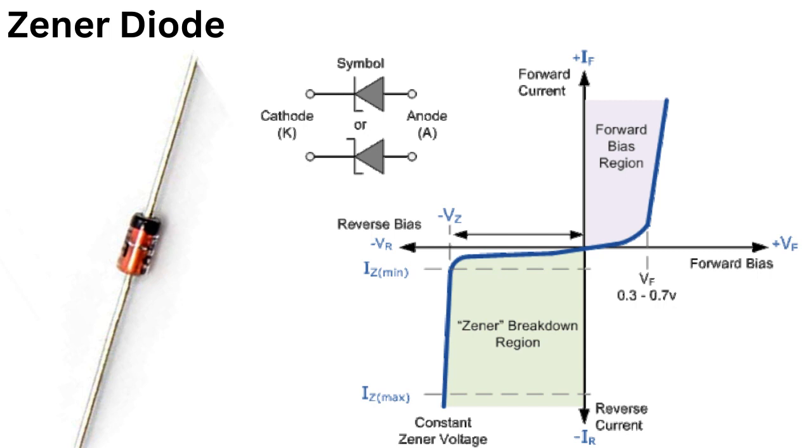While Zener diodes are primarily used in reverse bias, they can also be used in forward bias in some cases. For example, they can be used as a constant current source, where the Zener diode regulates the current flowing through the circuit.